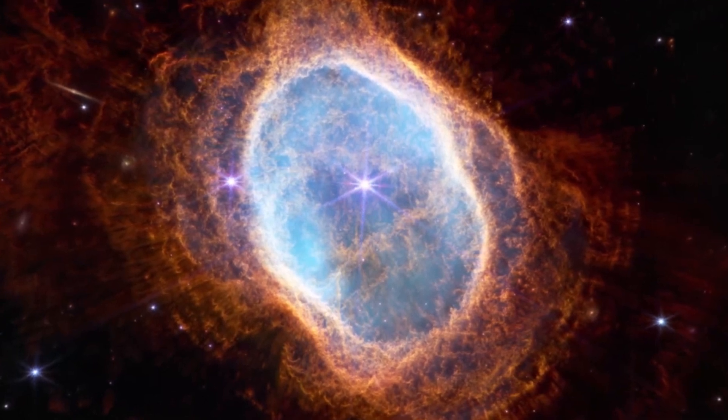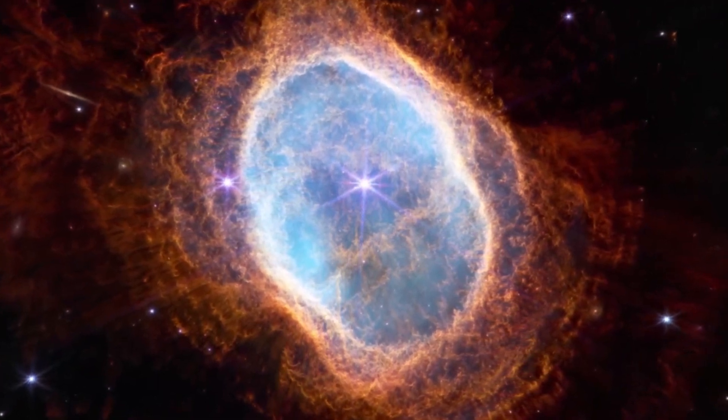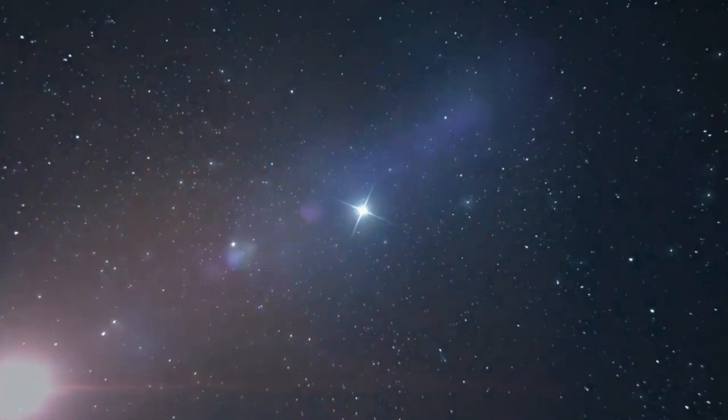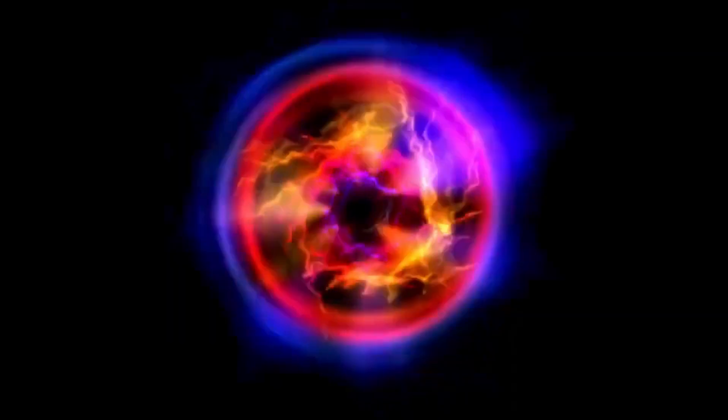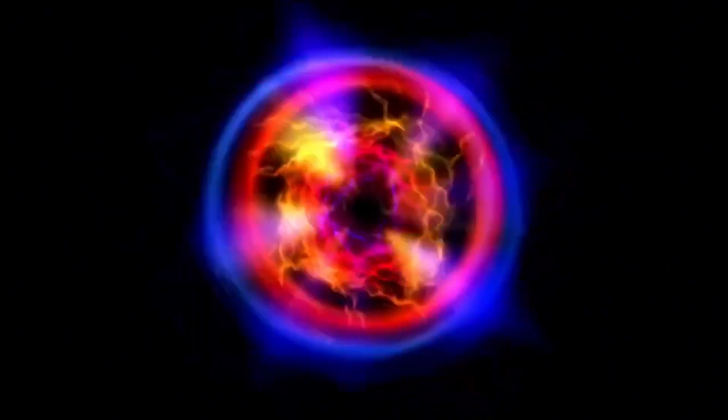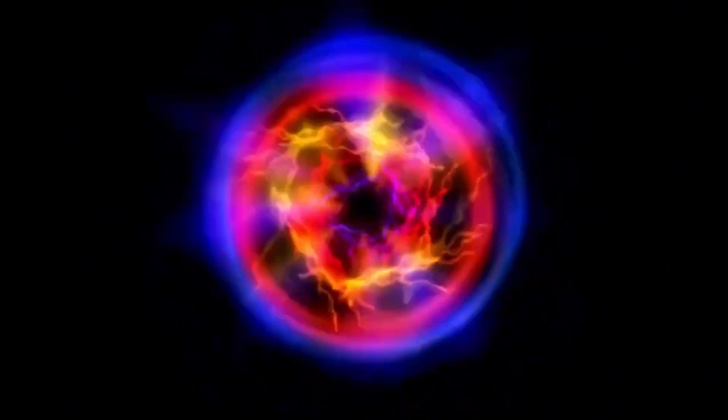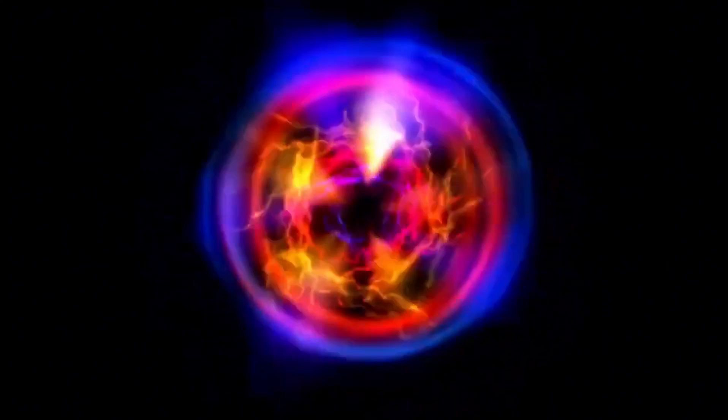This process must continue through oxygen, silicon, and finally, iron before the star's core collapses under its own gravitational pull, leading to a cataclysmic explosion. Since Betelgeuse is located 650 light-years away, any supernova event happening at present would only become visible to us after 650 years, due to the limitations imposed by the speed of light.